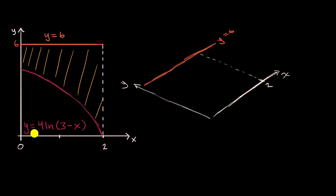And then the graph of y is equal to four times the natural log of three minus x would look something like this. And so this region is this region. But it's going to be the base of a three-dimensional shape, where any cross-section, if I were to take a cross-section right over here, is going to be a square. So whatever this length is,